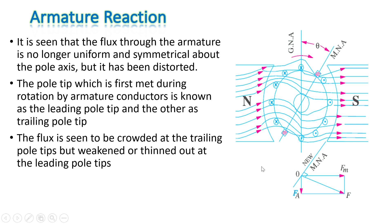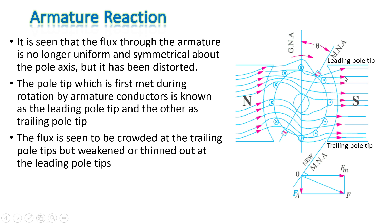This is the flux distribution when both fields exist simultaneously. The flux through the armature is no longer uniform and symmetrical about the pole axis — it has been distorted across the pole axis. If the armature rotates clockwise, the pole tip that conductors meet first is the leading pole tip, and the second is the trailing pole tip. Flux is seen to be crowded at the trailing pole tips and weakened or thinned out at the leading pole tips.